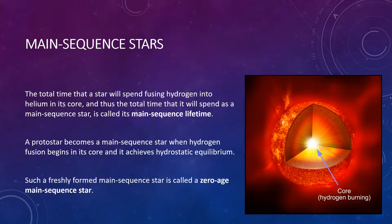In their cores, main sequence stars are all fundamentally alike. It is in their cores that all such stars convert hydrogen into helium via thermonuclear reactions. The total time that a star will spend fusing hydrogen into helium in its core — and thus the total time that it will spend as a main sequence star — is called its main sequence lifetime. A protostar becomes a main sequence star when steady hydrogen fusion begins in its core and it achieves hydrostatic equilibrium — the balance between the inward force of gravity and the outward pressure produced by the fusion. Such a freshly formed main sequence star is called a zero-age main sequence star.